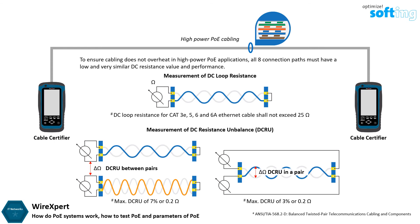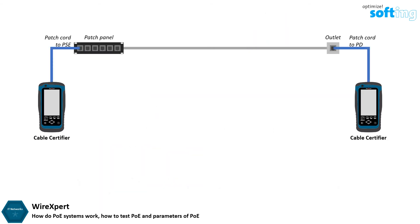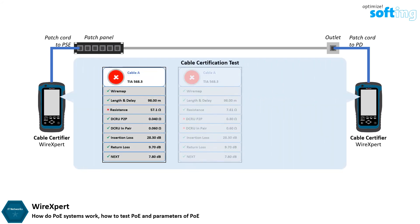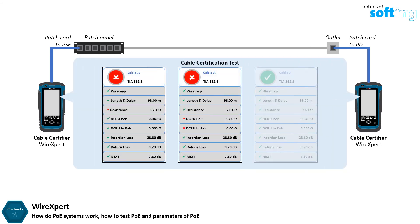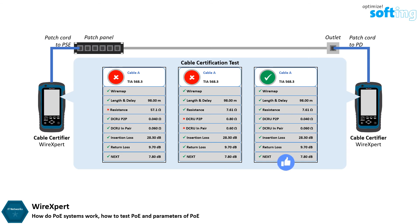It is important to note that DC loop resistance measurement is generally sufficient for PoE up to 60 watts, and DC resistance unbalance measurements are required for PoE that goes above 60 watts. When doing channel or permanent link measurements with a certifier such as Wire Expert, all parameters including the resistance measurements must meet the test limit selected before it will be determined as a pass. This means the installed cable is able to transmit data and also support PoE applications.